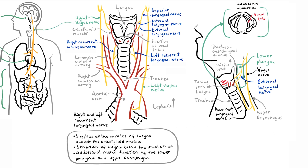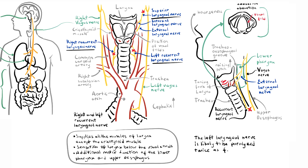Knowing the anatomy of the laryngeal nerve, we can appreciate that if the recurrent laryngeal nerve or the superior laryngeal nerve is injured, people can develop hoarseness of the voice. This is because the superior and recurrent laryngeal nerves supply the intrinsic muscles of the larynx, important in vocal cord movement. Further, when injured, these nerves affect sensation below or above the vocal cords. The left laryngeal nerve is likely to be paralysed twice as frequently as the right, because of its close proximity to many intrathoracic structures — it is the one that loops under the aortic arch, and so it is close to the heart and the lungs.